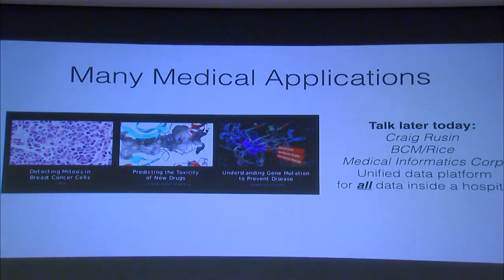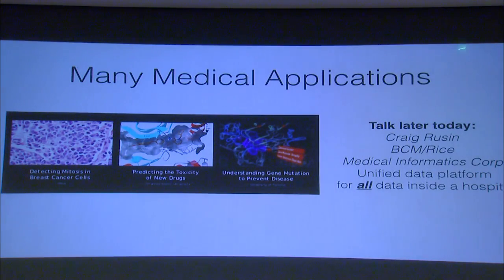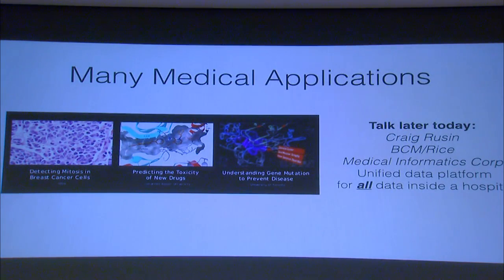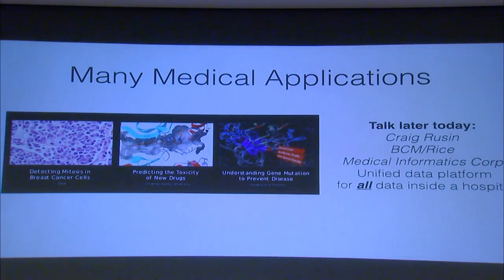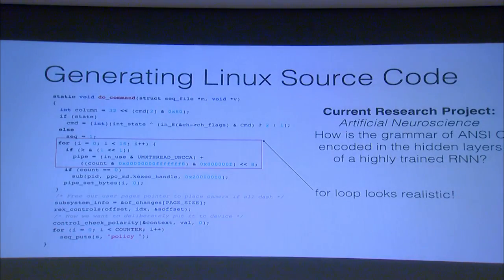Taking this to more serious applications, you can take the convolutional neural networks, which are very good image processing engines, and use them for all kinds of medical applications — basically any kind of medical vision-type task. I'll point you to one of my colleagues' talks later on, Craig Rustin. He's a professor at Baylor and Rice and also co-founder of a startup called Medical Informatics. They've built a unified data platform for all data inside of a hospital — this is the kind of thing where deep learning and machine learning can seep into medicine, which has historically had lots of data but fragmented and less accessible. That's one of the collaborations we're excited about.